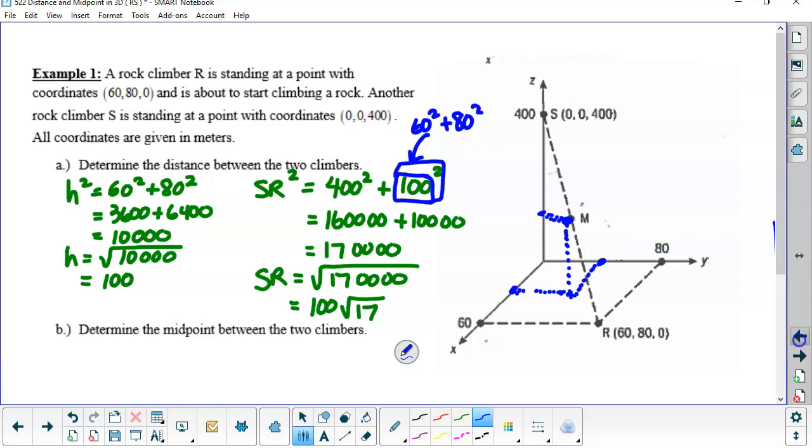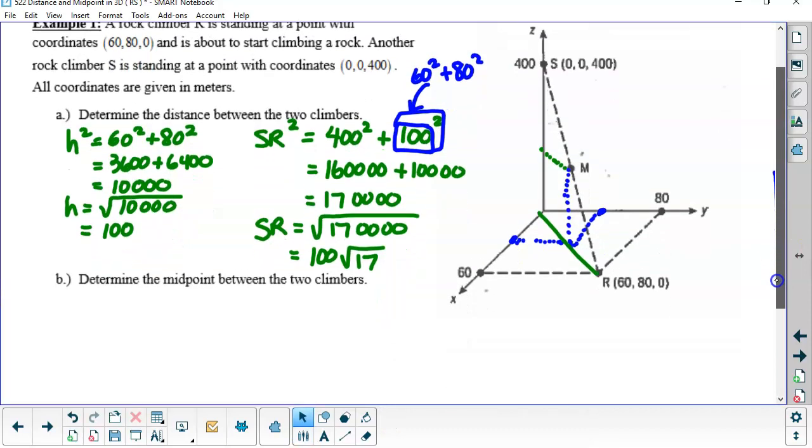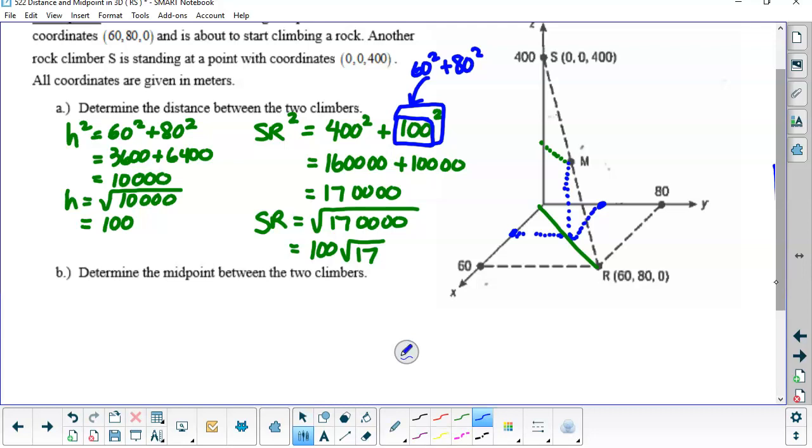So that actually would be, if I drew it better. If I had, remember I drew this diagonal here. So this would be parallel. That and that. So that's where, so now to get the midpoint between those climbers, we would look at, so midpoint of SR, it's going to be the average of the X values. So that's going to be 30. Average of the Y, that's going to be 40. And Z, that's going to be 200.